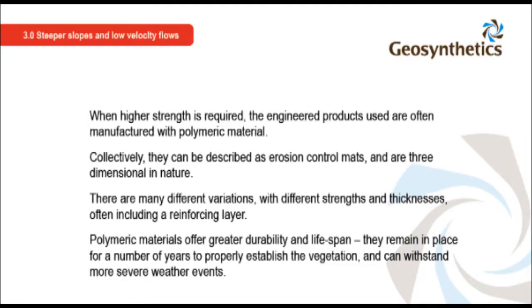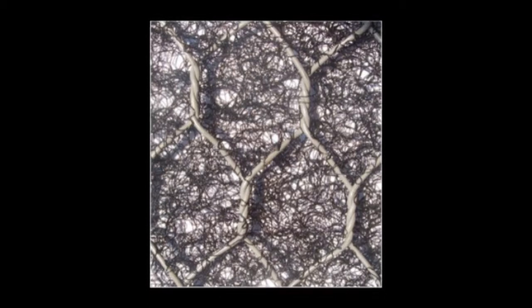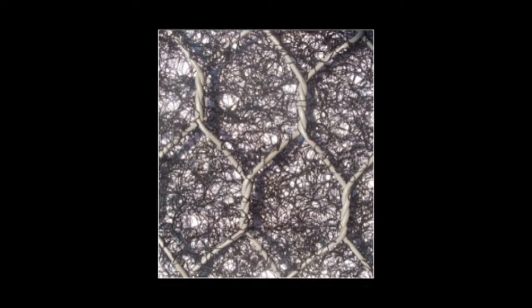When higher strength is required, the engineered products used are often manufactured with polymeric material. Collectively, they can be described as erosion control mats and are three-dimensional in nature. There are many different variations with different strengths and thicknesses, often including a reinforcing layer. Polymeric materials offer greater durability and lifespan. They remain in place for a number of years to properly establish the vegetation and can withstand more severe weather events. The three-dimensional nature is designed to enable soil to fill the voids. The root systems that develop will intertwine with the synthetic fibres and increase resistance to pull out in flow conditions. Adding a reinforcing layer, in this instance a gabion wire mesh, increases the strength of the three-dimensional mat and allows it to be used on steeper slopes without tearing.